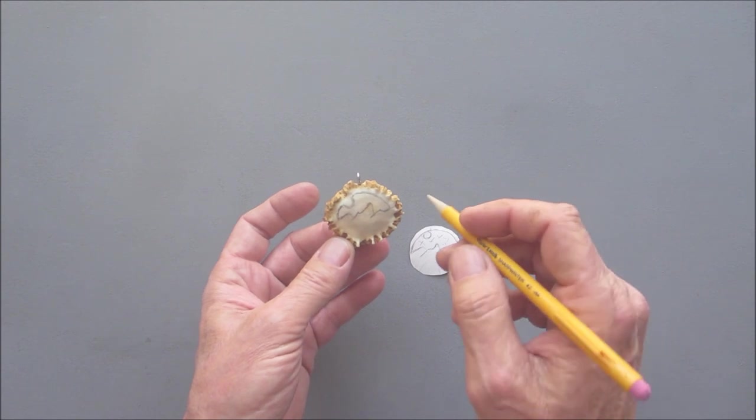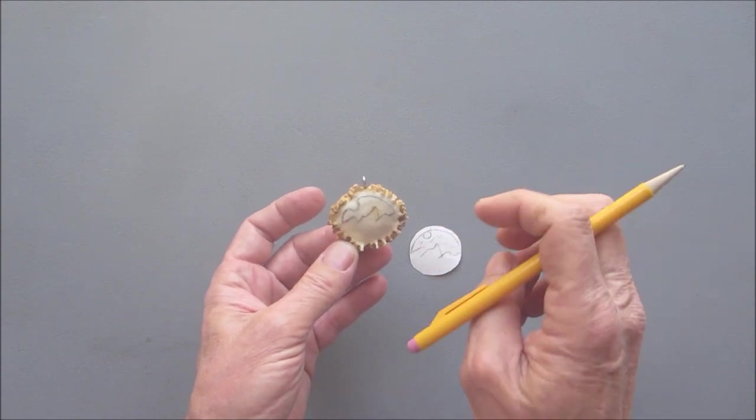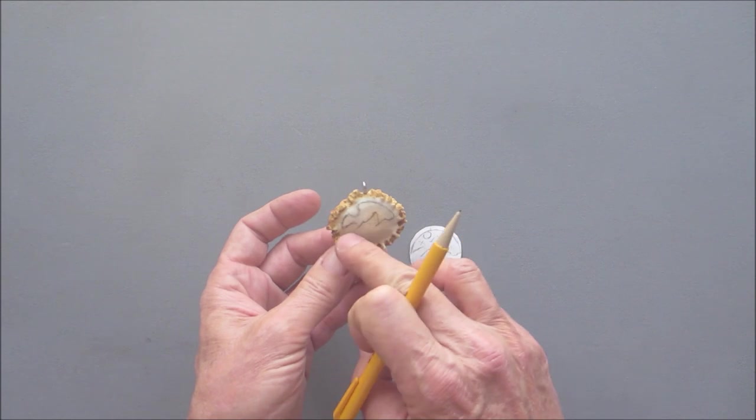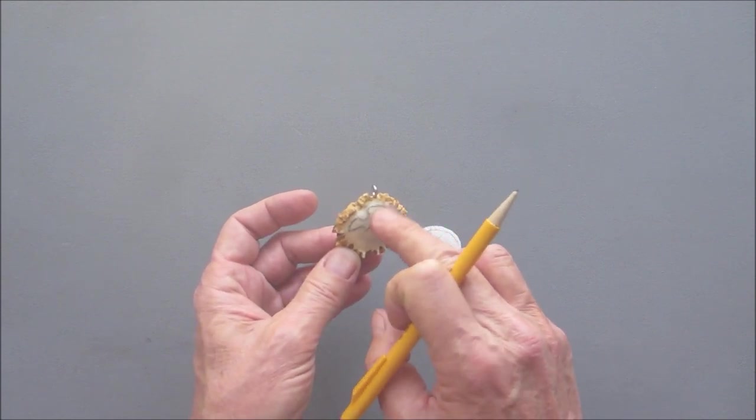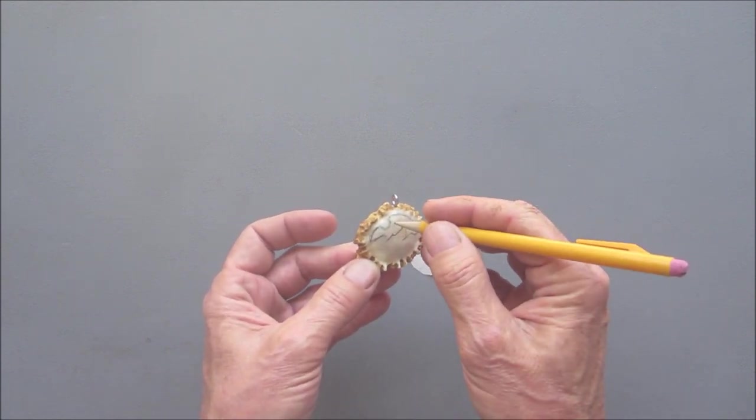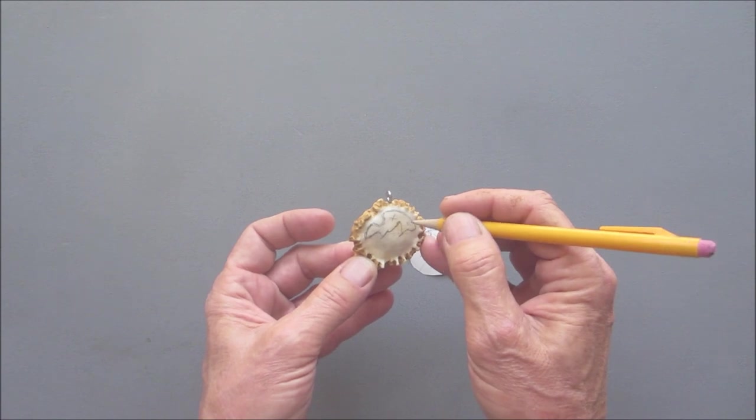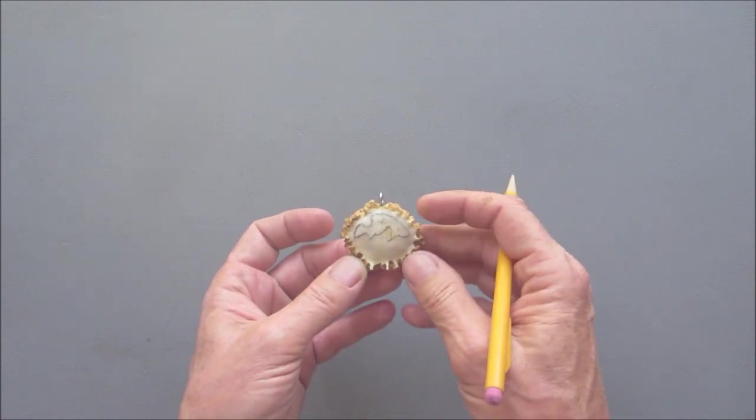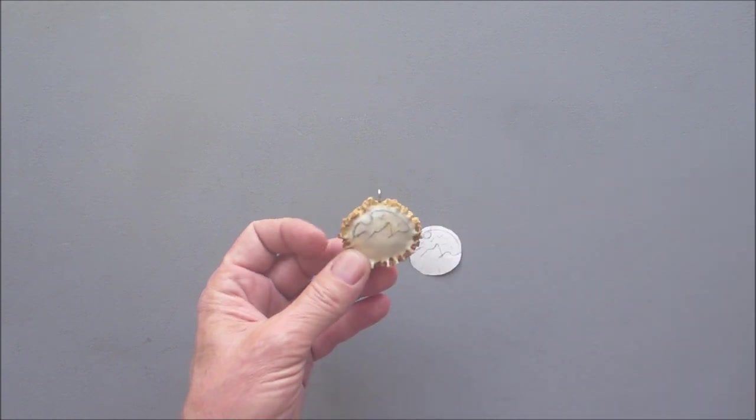So now what I'm going to do is I'm probably going to erase that and lower it down a little bit down here. Then I'm going to drill some holes in this area here so I can get my coping saw in there. So I'll do that and I'll come back when I have the holes drilled.